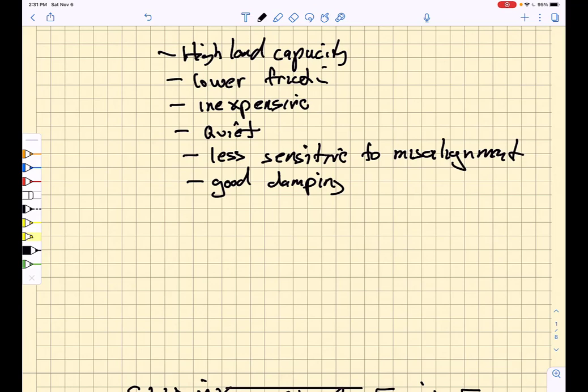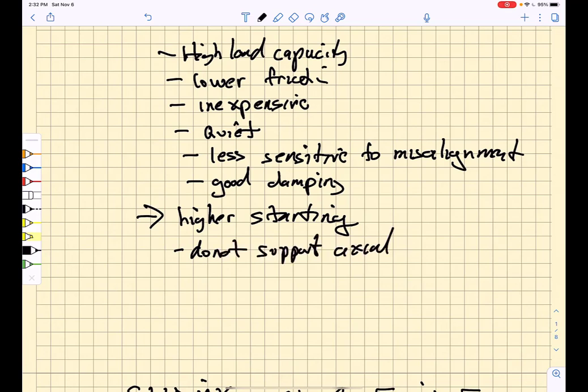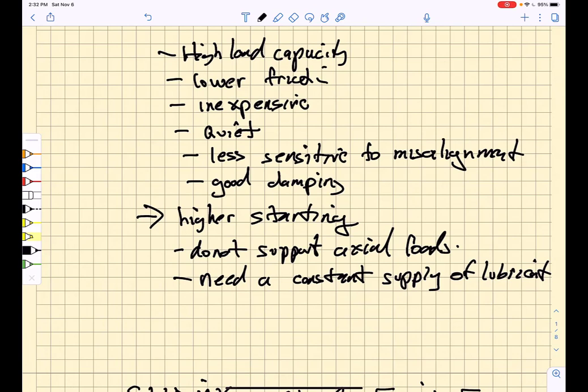The disadvantages are that they have a higher starting friction, and the reason is simple. Before the surfaces are moving relative to each other, they're going to just rest on each other with an elastic contact. The relative motion is what pulls the fluid lubricant in and separates the surfaces and allows them to glide on a film of fluid. They do not support axial loads, so you got to handle those in some other way. They need a constant supply of lubricant, so they have to be either sitting in a lubricant bath or they have to pump lubricant into the joint. Temperature has a big effect on the performance of the joint. Just consider motor oil: viscosity of the oil changes with temperature, and they do need a large axial space.